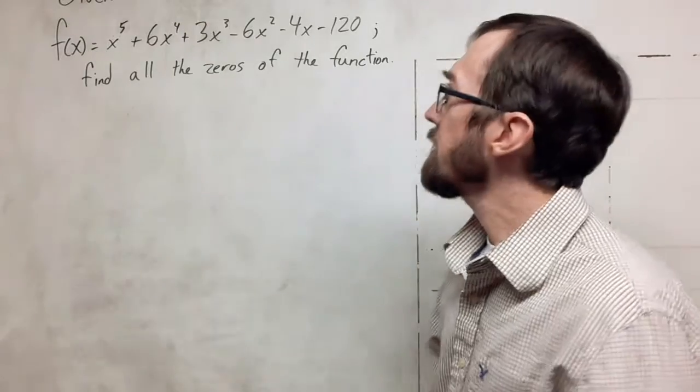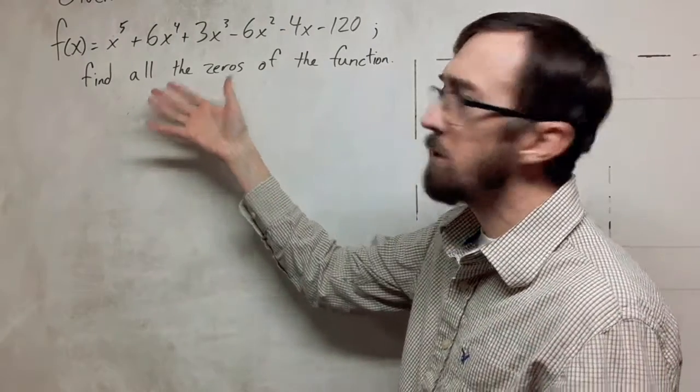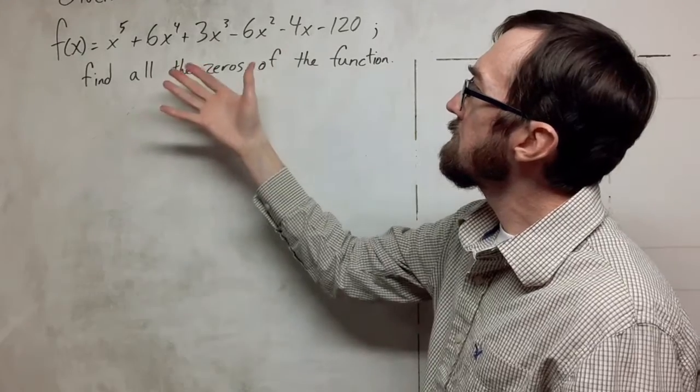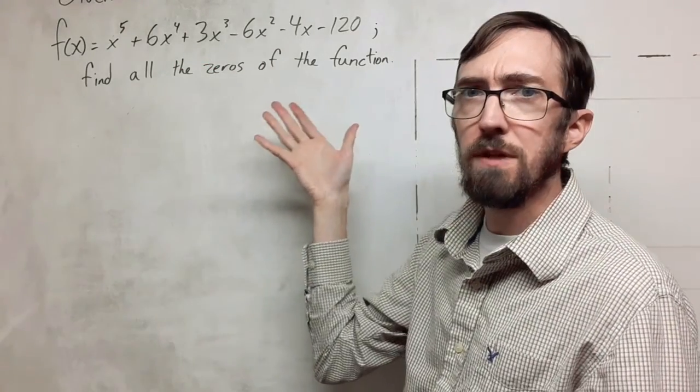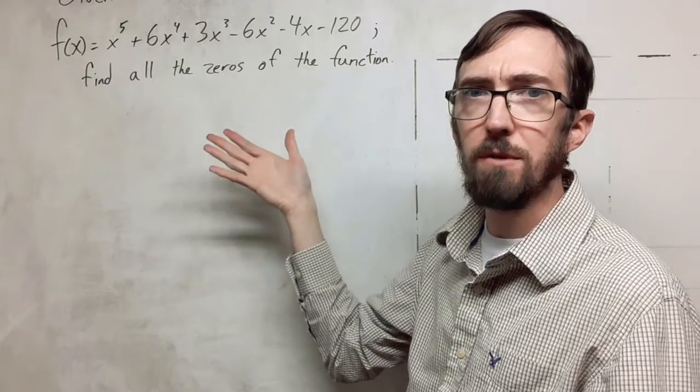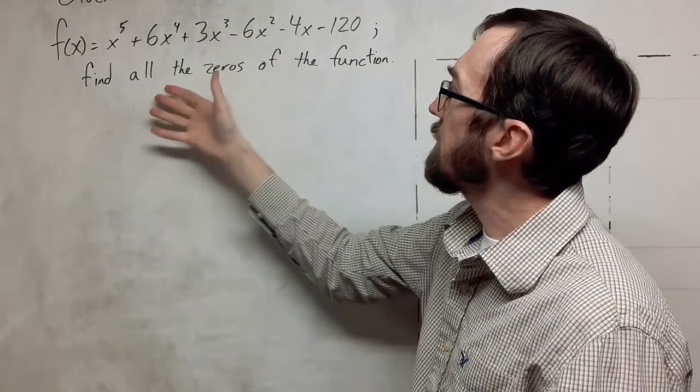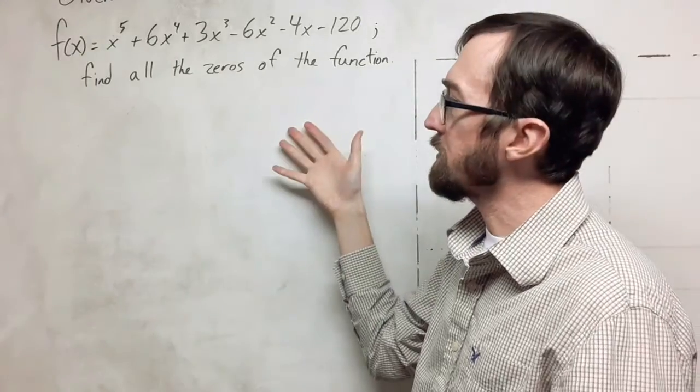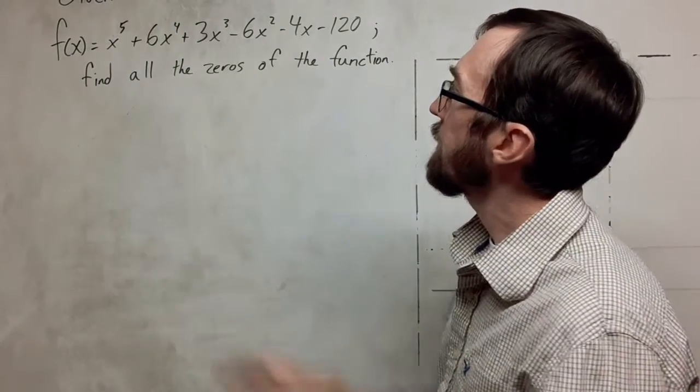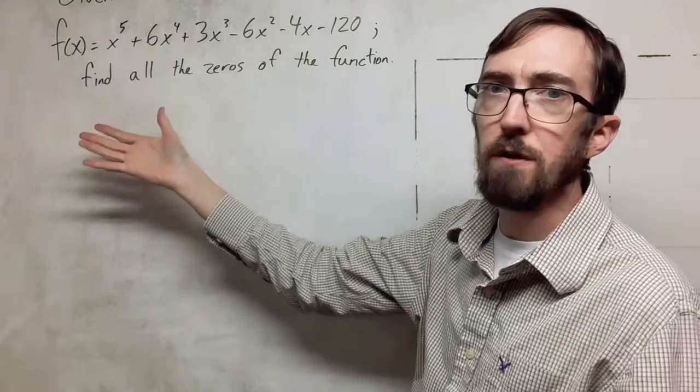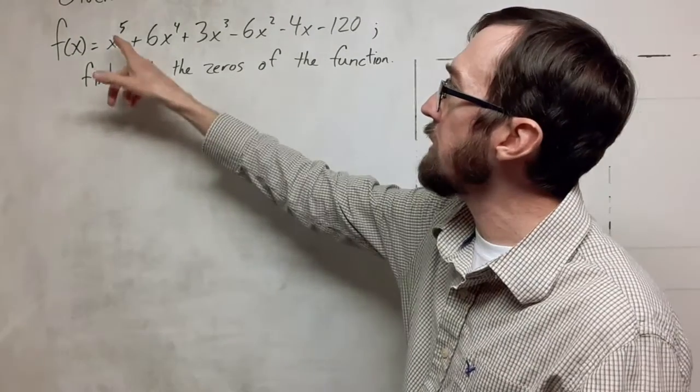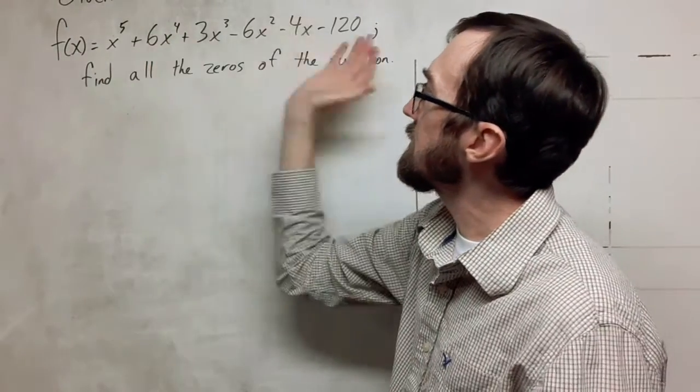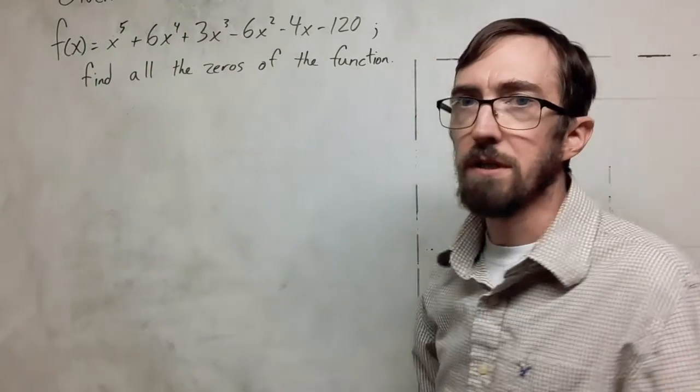I am going to try to find all the zeros for this fifth-degree function. Since we're finding all the zeros, that means we could include the complex values. If it had said find all the real values, then we're only finding those that we would see plotted on the xy plane. We know, due to the fundamental theorem of algebra, that we're going to have five values that should satisfy this equal to zero when we plug in an x.